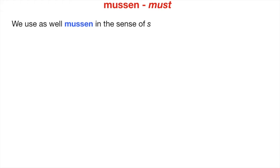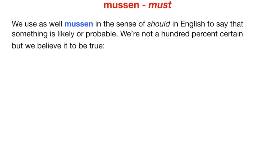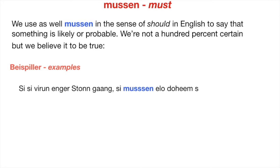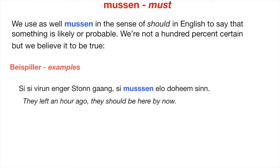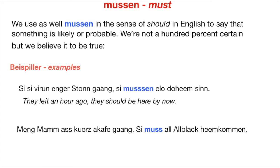We also use Mussen in the sense of 'should' in English, to say that something is likely or probable — we are not one hundred percent certain, but we believe it to be true. Examples: 'Si sinn eng Stonn gaangen, si mussen elo doheem sinn' — They left an hour ago, they should be here by now. 'Meng Mamm ass kuerz a Kaffi gaangen. Si muss all Moment heem kommen' — My mother went briefly shopping, she should be back home any moment.